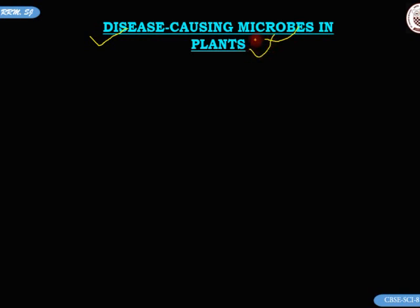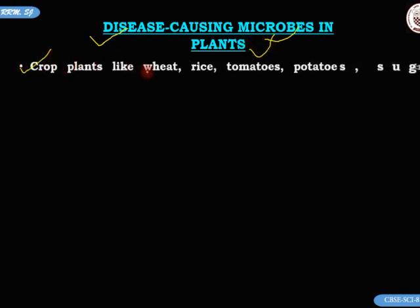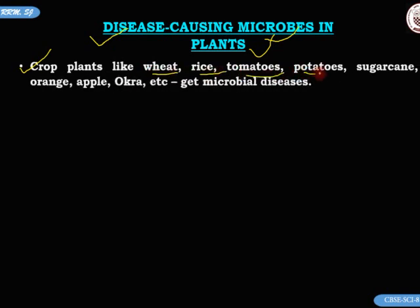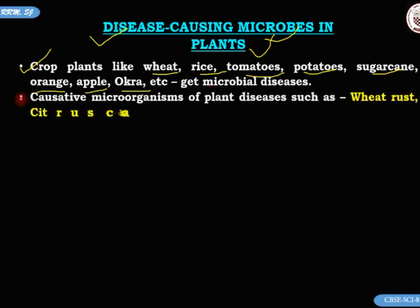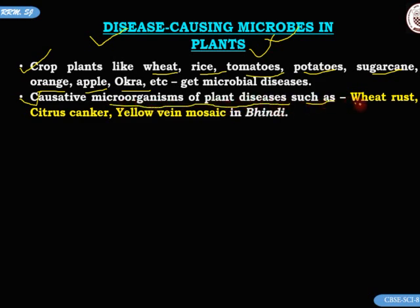Let us now move on to disease-causing microbes in plants. We shall study crop plants like wheat, rice, tomatoes, potatoes, sugar cane, orange, apple, and okra, which get microbial diseases. We shall study specifically the causative microorganisms of diseases such as wheat rust, citrus canker, and yellow vein mosaic in bhindi, that is lady's finger, also called okra.